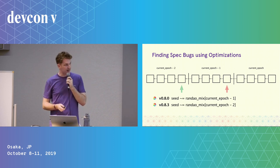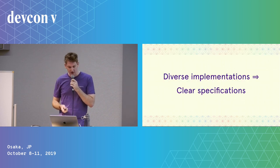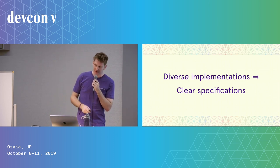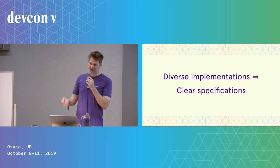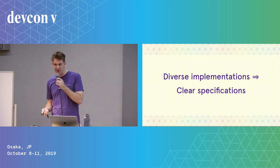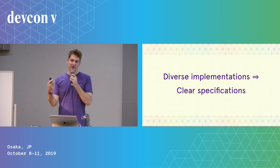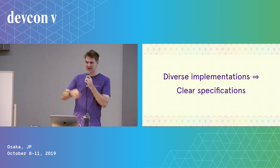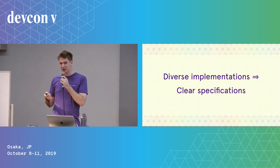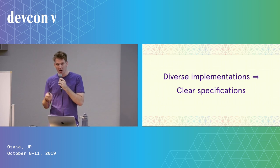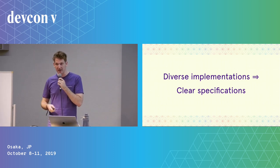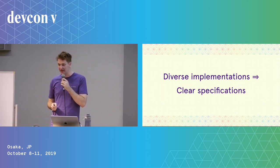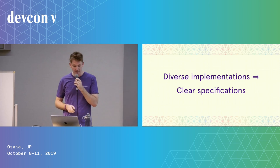We clarified this with the spec and found out that it's not meant to be like this. We should be looking at the RANDAO mix from two epochs back — where the green arrow is — and that was fixed in v0.8.3 of the spec. Something surprising here is that by implementing an optimization, it actually allowed us to discover a bug in the spec. This speaks to something more general: by having a diversity of implementations in different languages and with different optimizations, phrasing the same thing in different ways, that can actually lead to clarity of the specification — and that's a really good way to design software.